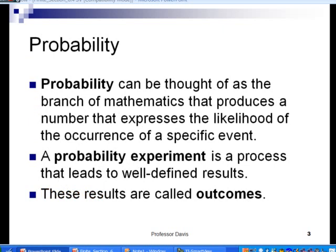Let's start out in slide number 3 with the most basic of definitions. What is probability? We can say that probability can be thought of as the branch of mathematics that produces a number that expresses the likelihood of the occurrence of a specific event. Probability really kind of started out through Mendel and genetics and applications in weather forecasting. Also, we can say that a probability experiment is a process that leads to well-defined results. Remember, we talked about that in section 6.1 when we talked about the events had to be empirical. In other words, the outcomes had to be well-defined. And those were the results of a probability experiment. We called those outcomes.